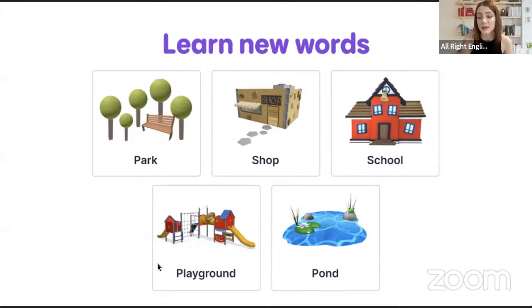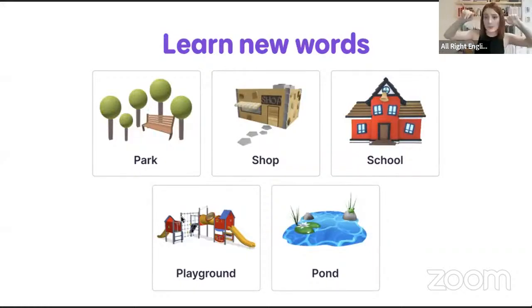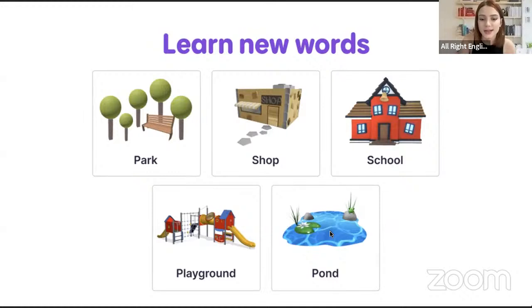The next word is playground. Playground — it's very simple, right? It's the place where we play. We can play hide-and-seek, we can slide — here is a slide — we can climb on monkey bars. All right, that's the playground.